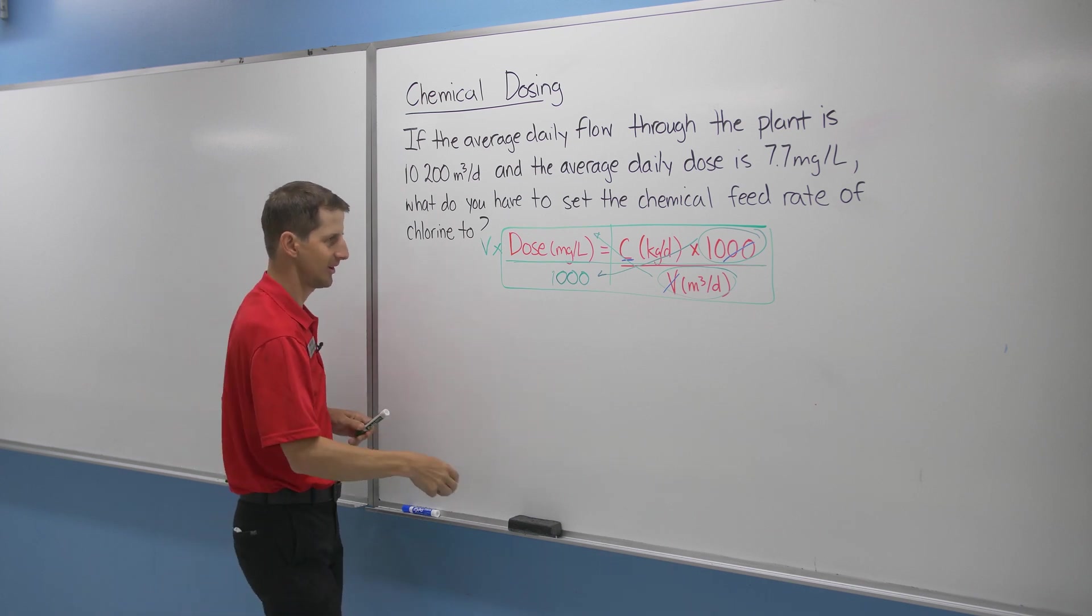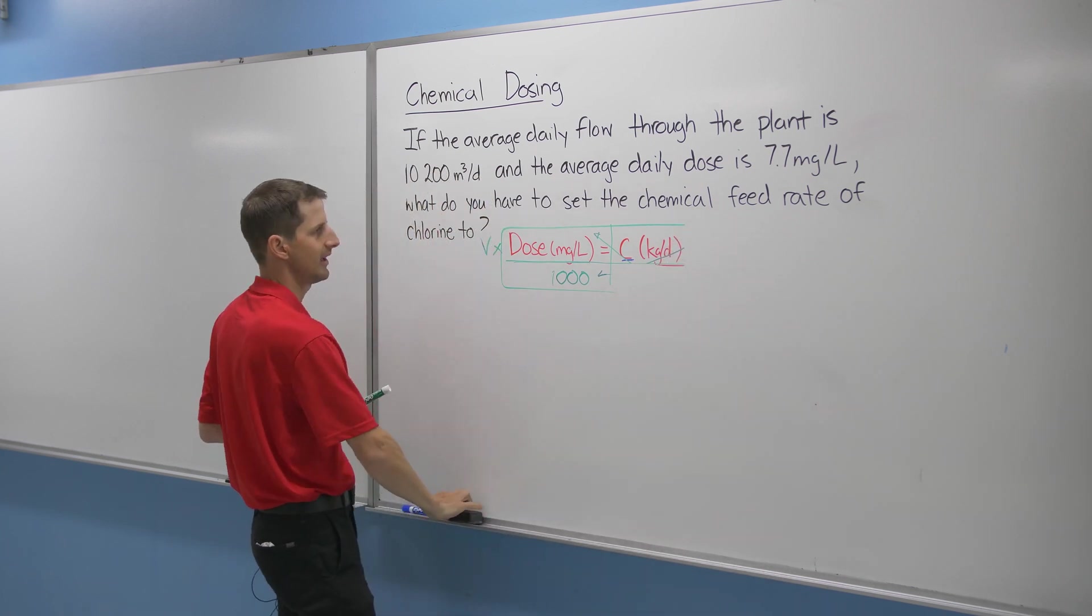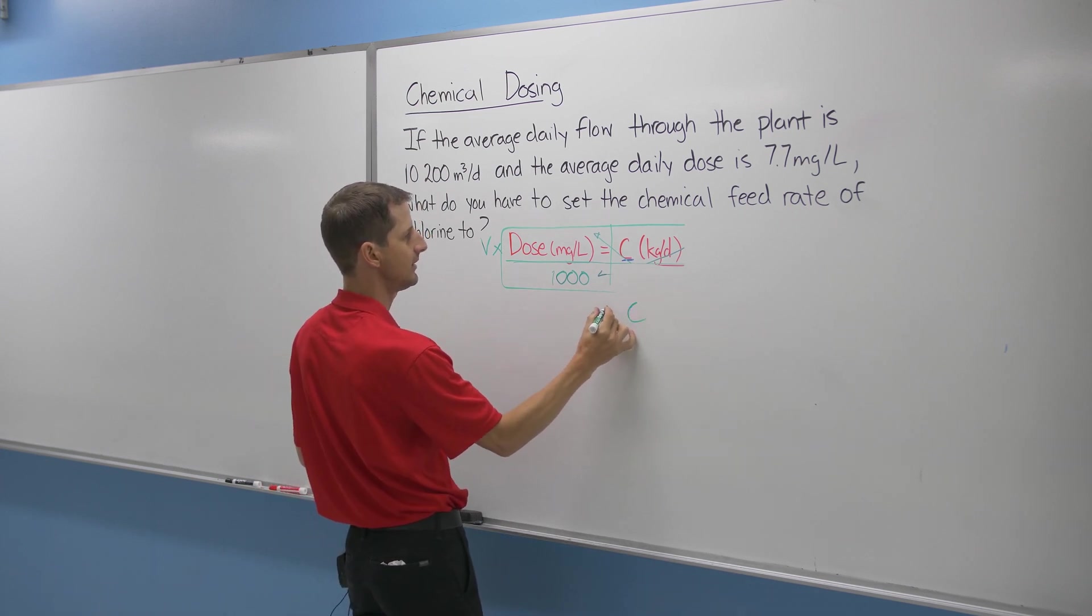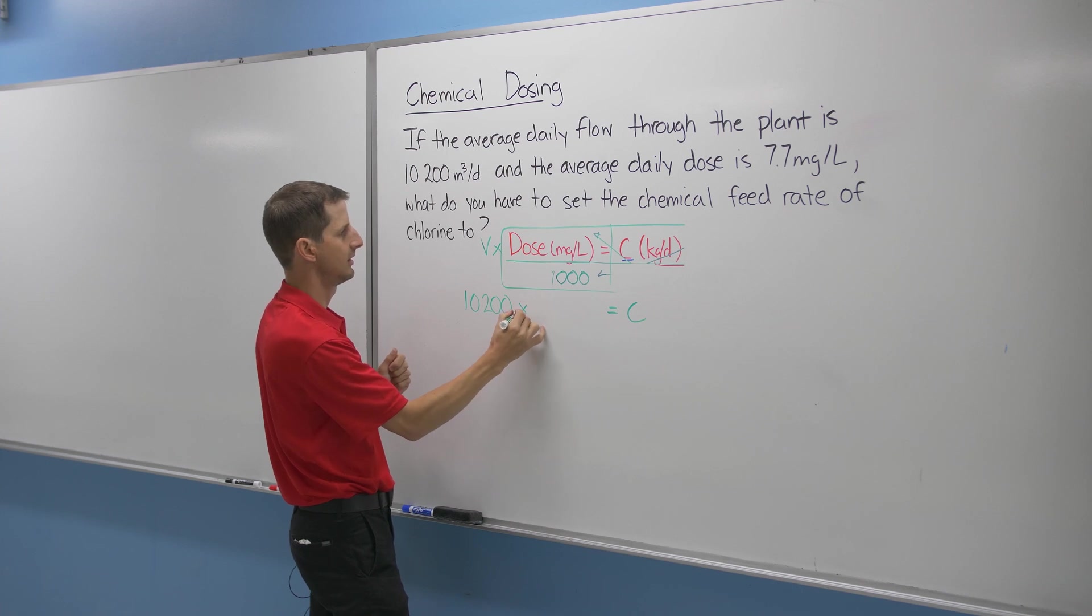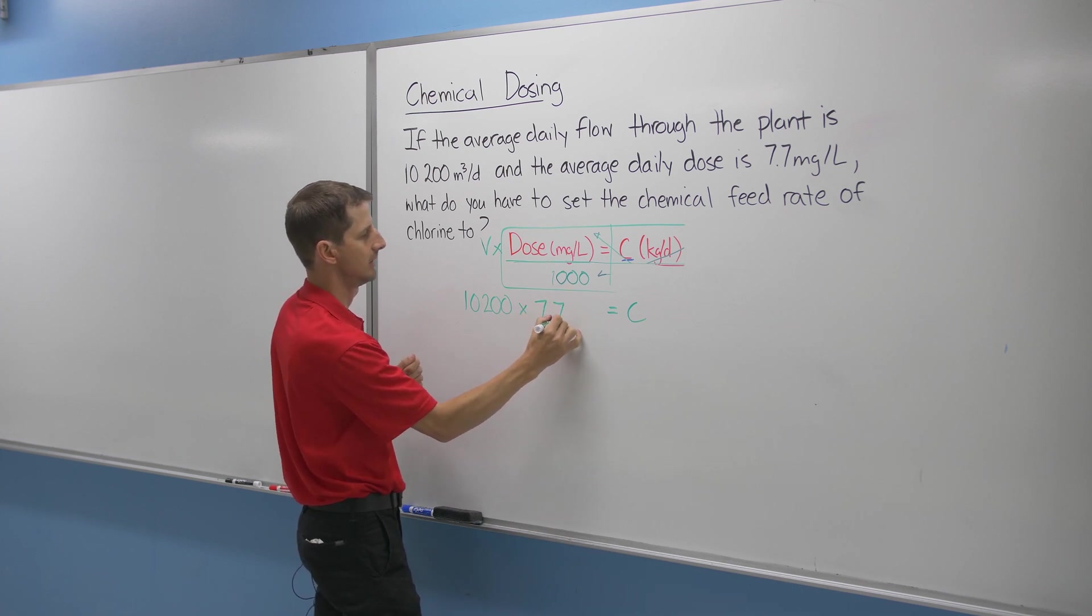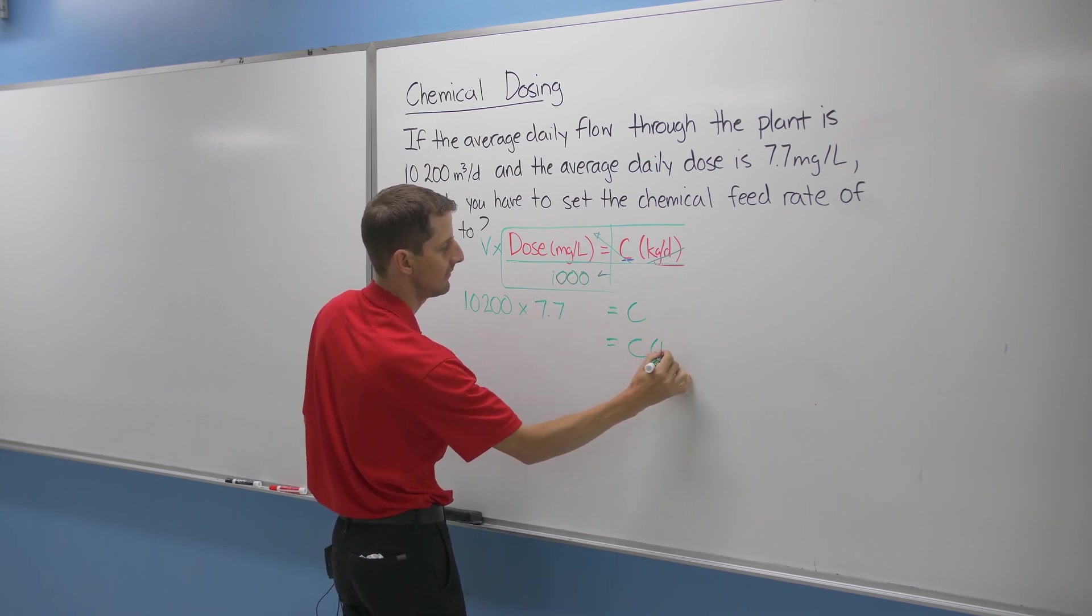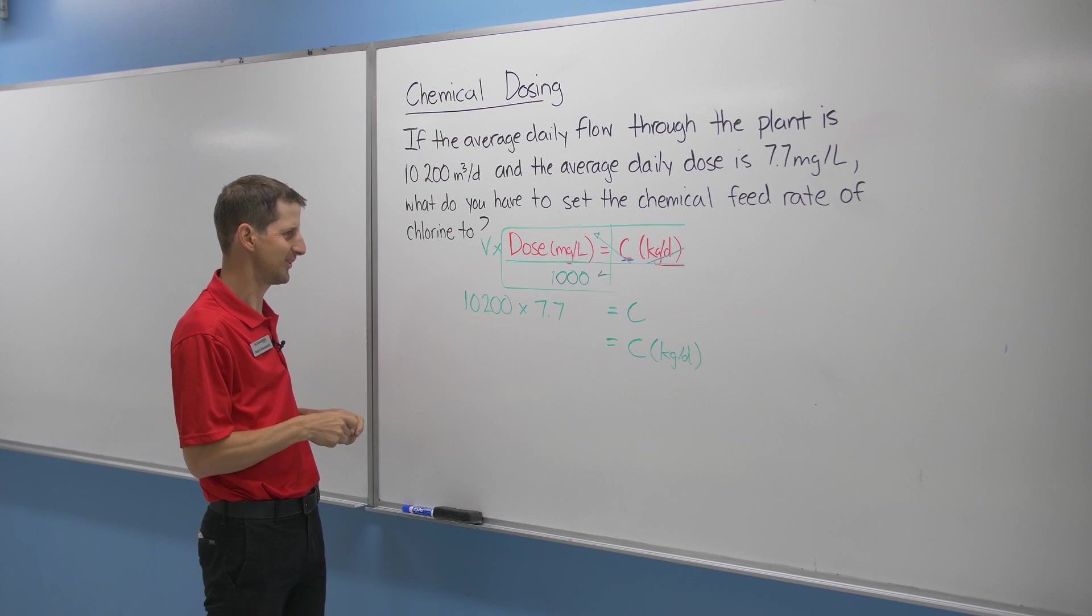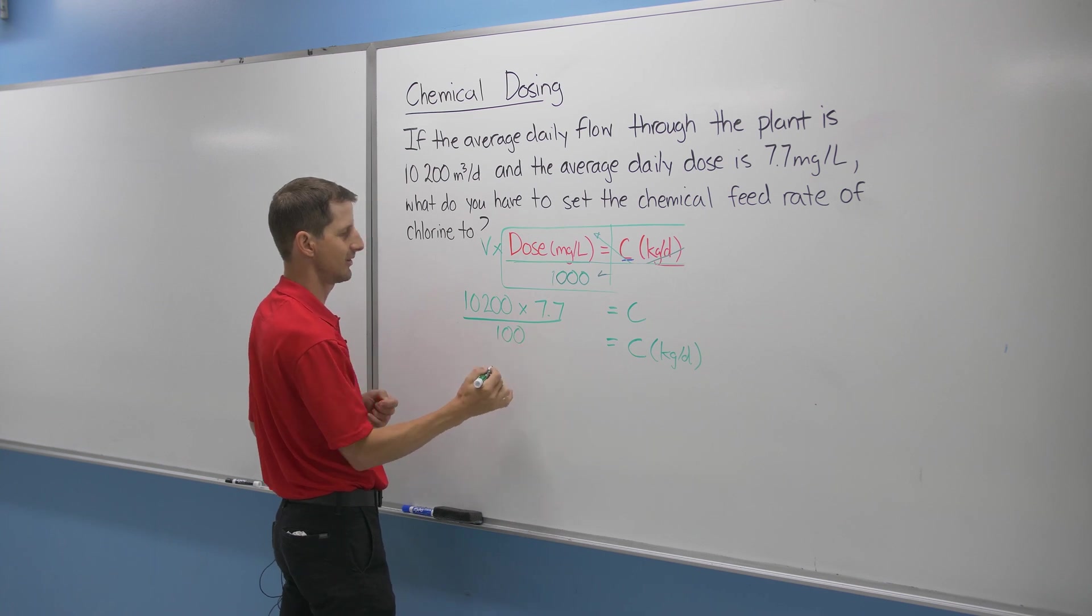So let's solve that equation to get rid of the stuff that we moved. Punch in our values. It's a little bit backwards, but it's the same thing, right? So our C is equal to our volume 10,200. The units were all good, so I'm not going to worry about them. I'm just going to write the numbers times the dose, and that'll give us our feed rate in kilograms per day. How much chemicals per day. So you want to make sure that your batch tank is holding enough to last for the day before you need to change it or order more.